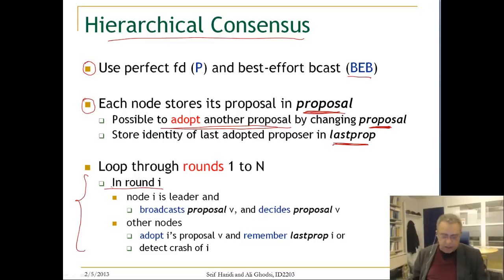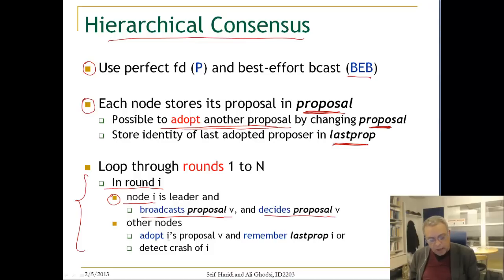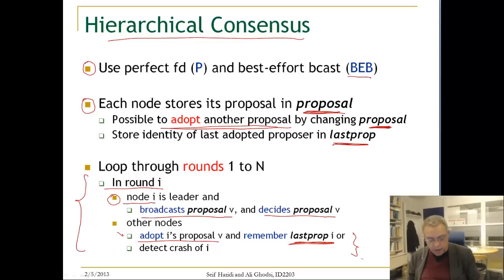In a particular round, say round i, node i is the leader. Assuming that node is correct, it will perform a best-effort broadcast of its proposal along with its identity, and it will decide on that proposal. Other nodes that are not the leader in this round will adopt node i's proposal if they have not decided yet — these are nodes with numbers higher than i — and remember the last proposal. The other alternative is if they detect that the leader has crashed; they ignore it and move to the next round. In both cases we move to the next round: either you adopt a proposal from the leader, or you detect the crash of the leader.